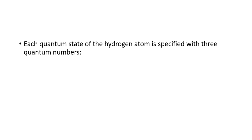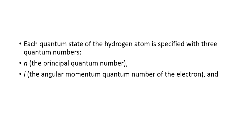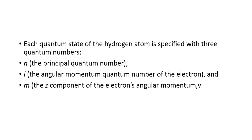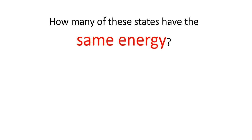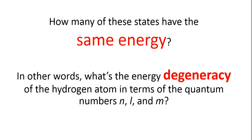Each quantum state of a hydrogen atom is specified by three quantum numbers: n, the principal quantum number; L, the angular momentum quantum number of the electron; and m, the z-component of the electron's angular momentum. We ask: how many of these states have the same energy? In other words, what is the energy degeneracy of the hydrogen atom in terms of quantum numbers n, L, and m?